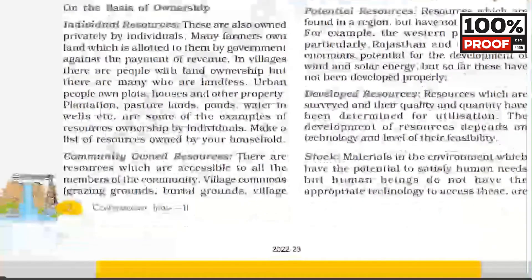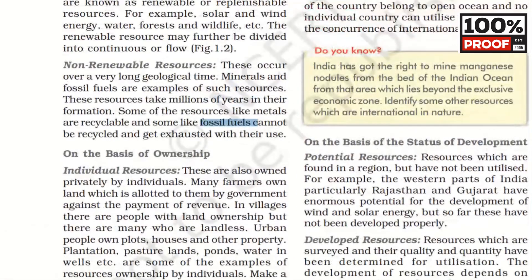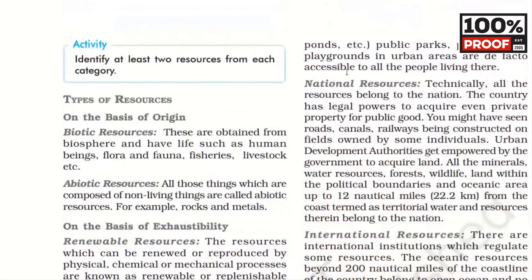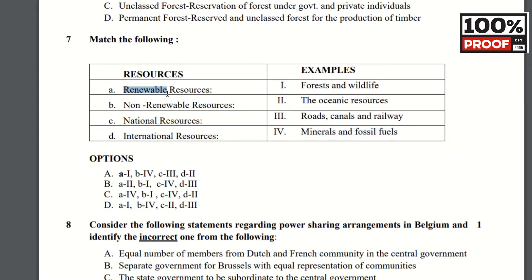So everything matches. On the basis of ownership, you can also see it is divided into National Resources and International Resources. National resources are those within the nation — roads, canals, railways. International resources are in the ocean. So when you solve this question, Renewable Resources are forest and wildlife, Non-Renewable Resources are minerals and fossil fuels, National Resources are roads, canals and railways, and International Resources are oceanic resources. This is the question from Chapter 1, Resources and Development.